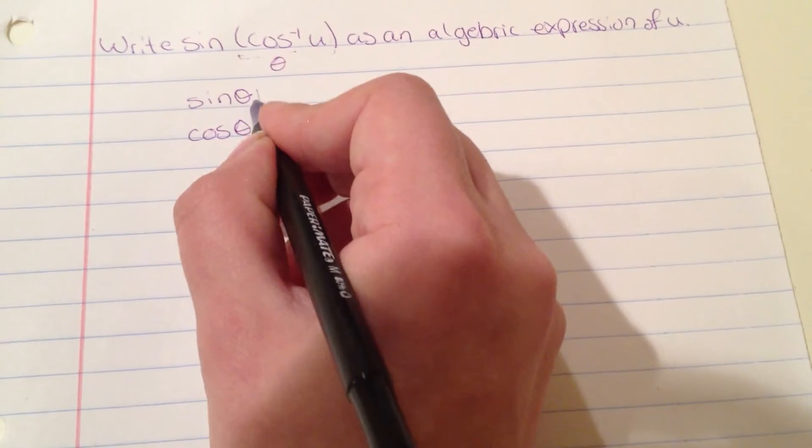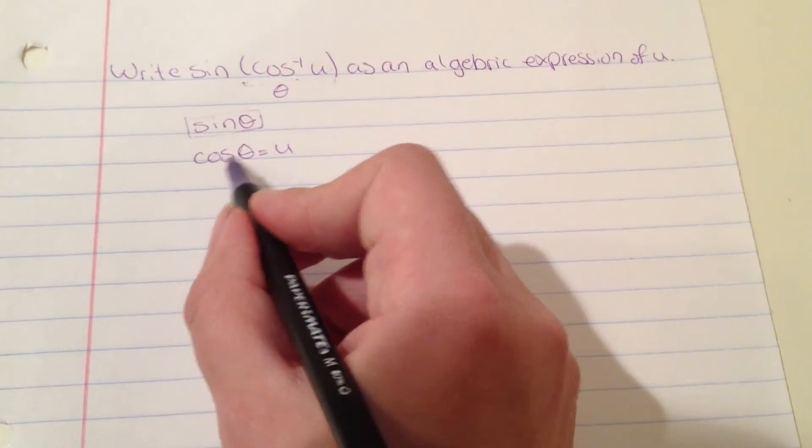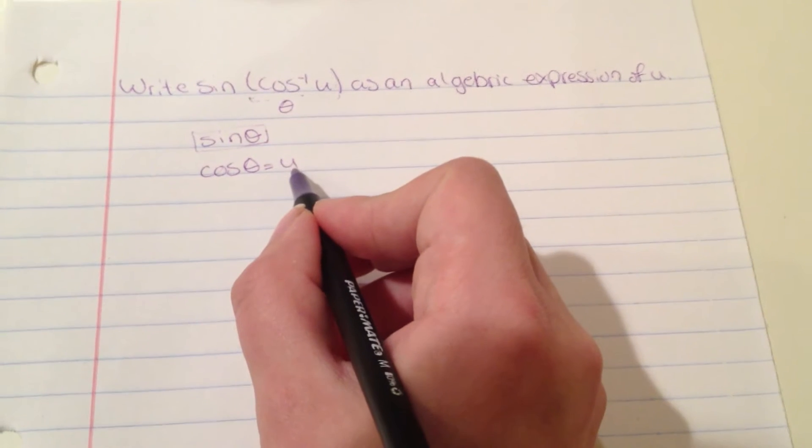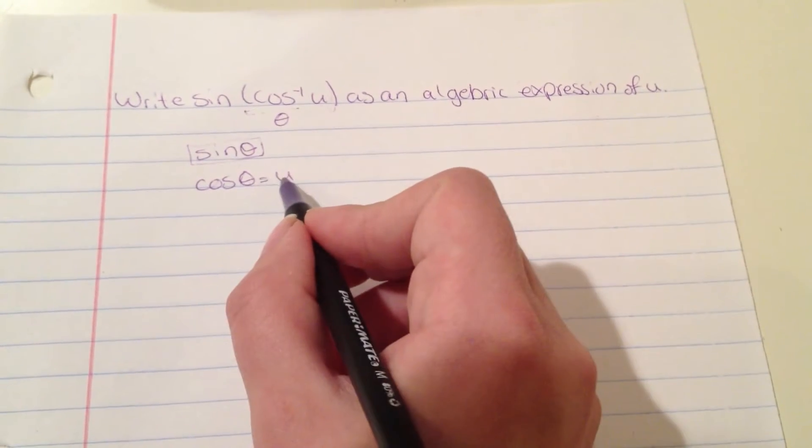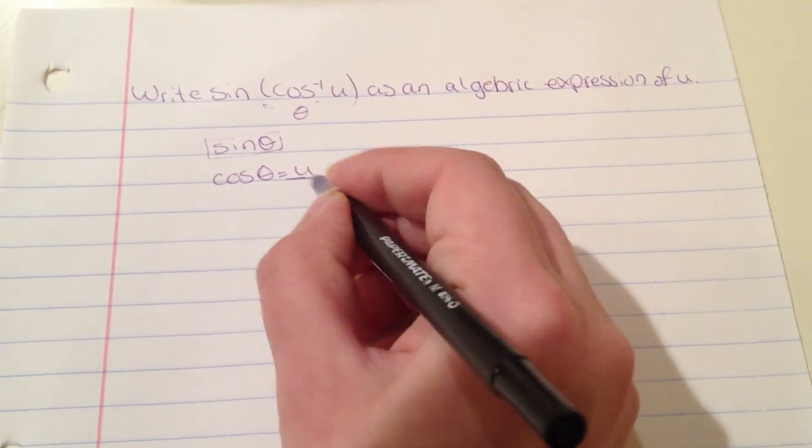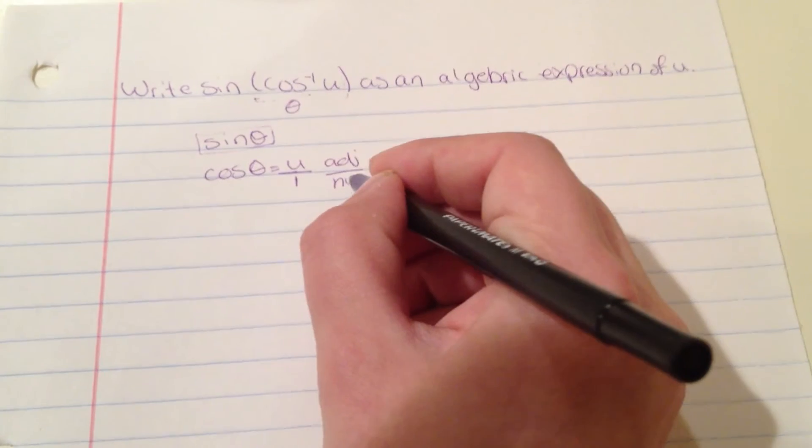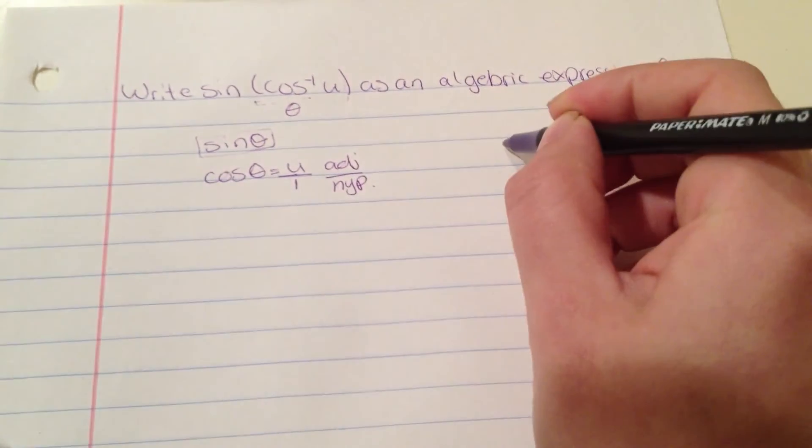We have to find the sine of theta. Cosine of theta equals u, and cosine is adjacent over hypotenuse. Our hypotenuse is 1, so this is adjacent over hypotenuse.